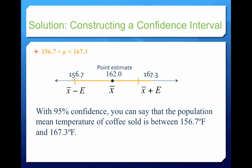We're not saying there's a 95% probability that mu is in there — we're saying we're 95% confident that the population mean temperature is between these two endpoints.